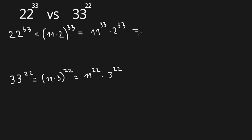Let's go back to the first number. 11 to the power of 33 can be written as 11 to the power of 22 plus 11. And then times 2 to the power of 33, which can be written as 2 to the power of 3, all to the power of 11.